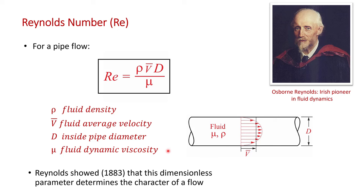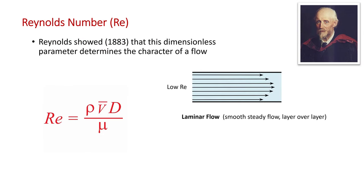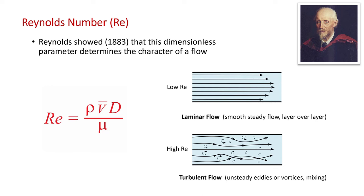Reynolds famously showed in an experiment in 1883 that this dimensionless parameter determines the character of the flow in the pipe. He found that at low values, the flow was laminar — smooth, steady streamlines with layers of fluid flowing smoothly over one another with no lateral mixing. But at higher values, the flow became turbulent, characterized by unsteady vortices, sometimes called eddies, which cause lateral mixing and make the fluid harder to pump.